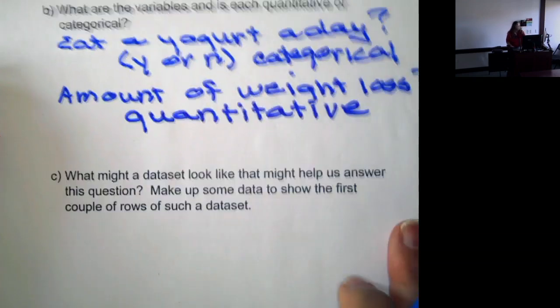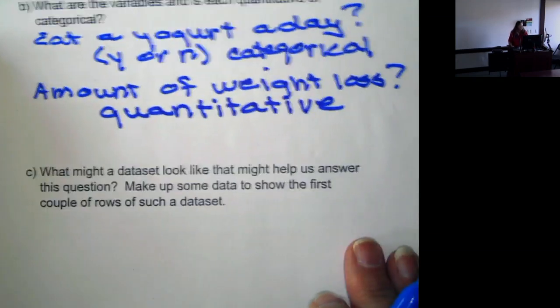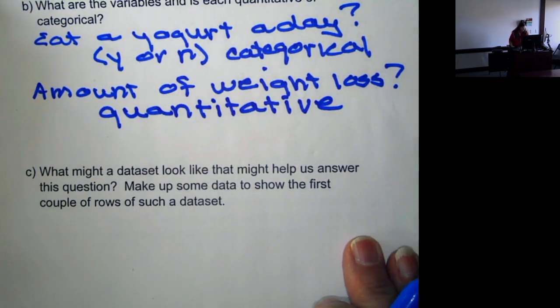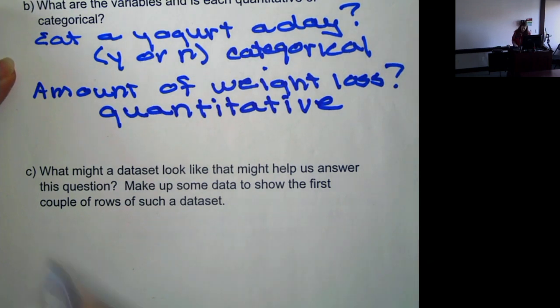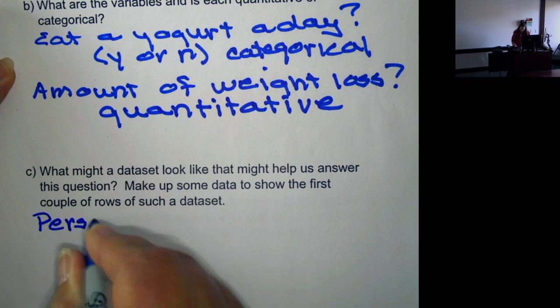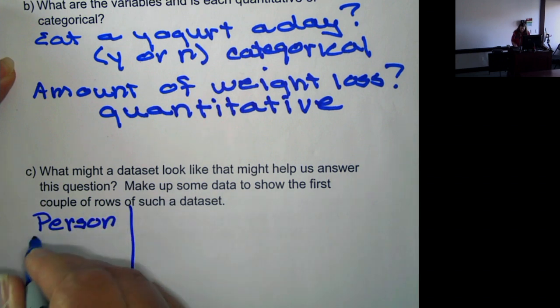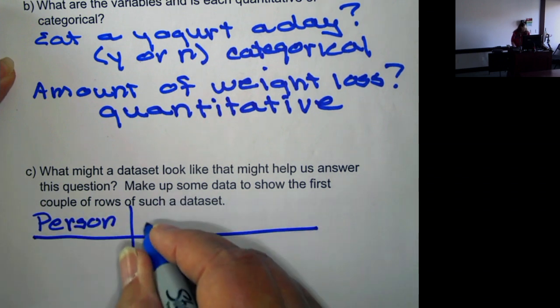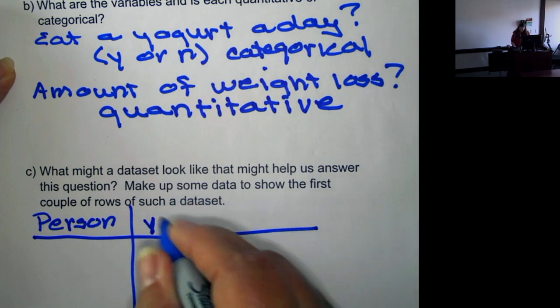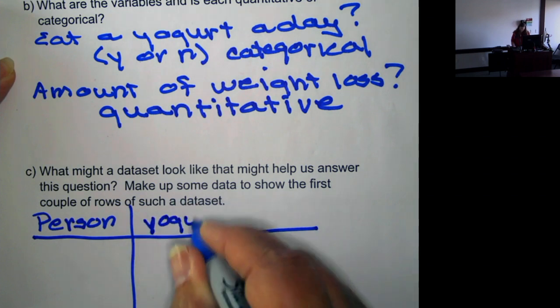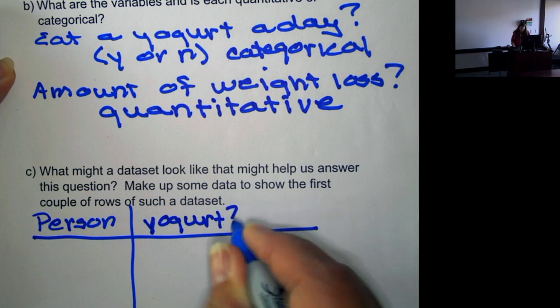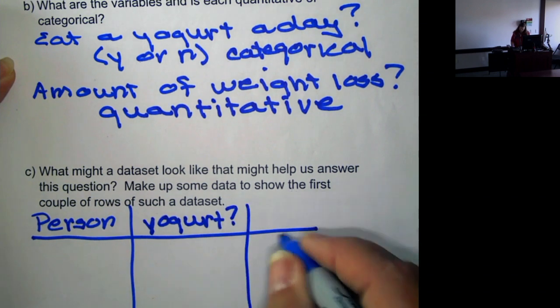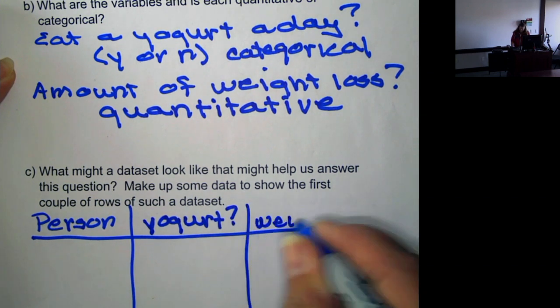Now if we want to look at what a dataset might look like that might help us answer this question, we're going to have three columns. One is not a variable, it's an identifier. So we have the person, we have whether they ate yogurt, and then their weight loss.